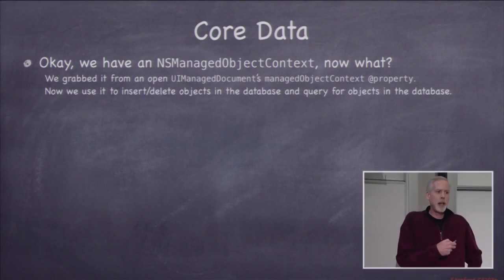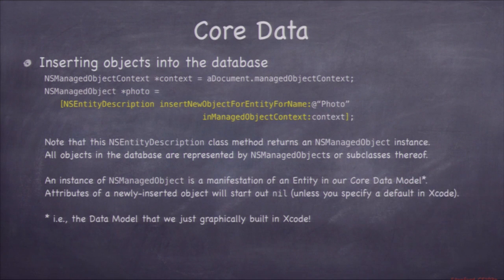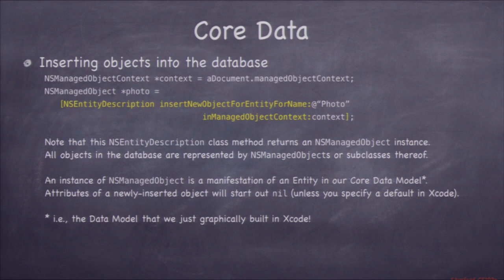For your homework, you'll probably have one UIManagedDocument and use its context everywhere in your app — that's the simpler approach and what I recommend. Now that we have an NSManagedObjectContext, what can we do? We can insert and delete objects, change attributes, and query for objects. To insert a new photo or photographer, use this class method on NSEntityDescription: insertNewObjectForEntityForName inManagedObjectContext. The context is required for any insert.